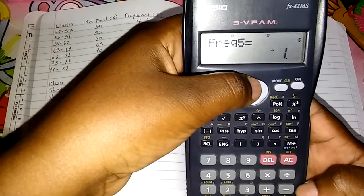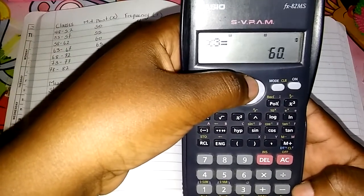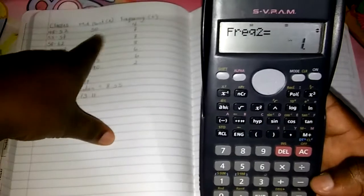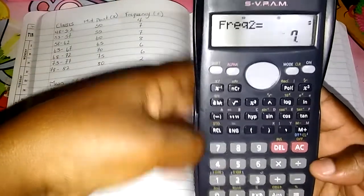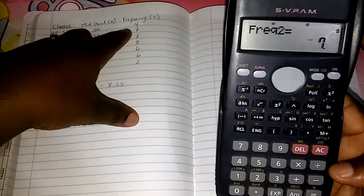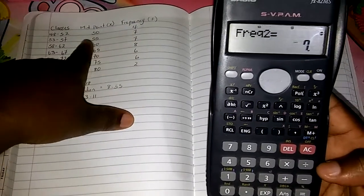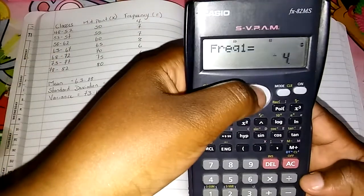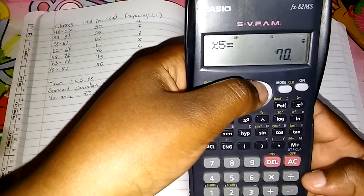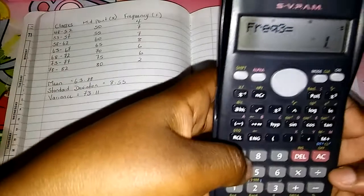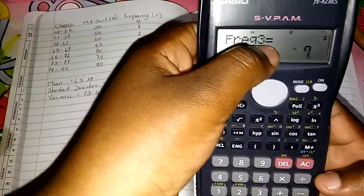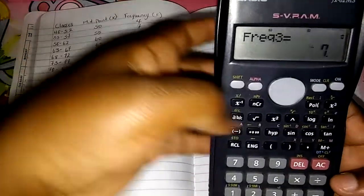We're going to search for F2, frequency two. And for frequency two, the second number, it is 7, so we're going to add 7, equal. Frequency 2 is equal to 7, second number correct as you can see. Then we're going to find 3 and continue for everything. For 3 it is also 7. You add 7, equal. Frequency for the third number is 7, correct.